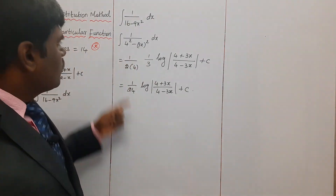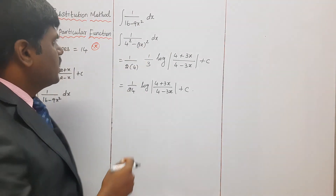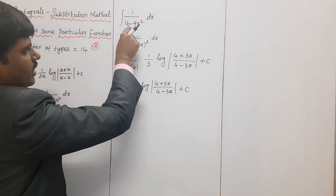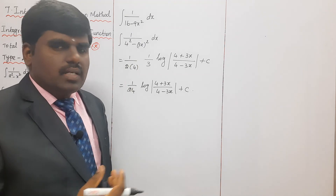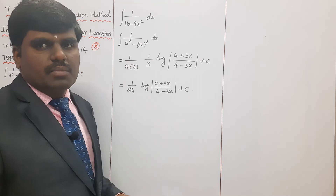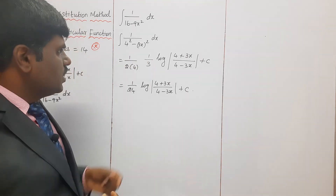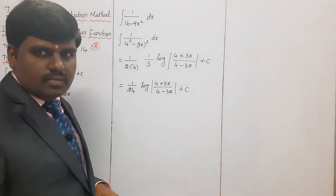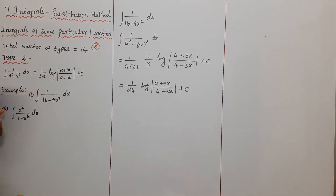An alternative approach: take 9 as a common factor from the denominator, giving 1/9 times 1/(16/9 - x²), and use the formula in another format. Alternatively, use substitution: put t = 3x. Any of these methods will give the same answer.